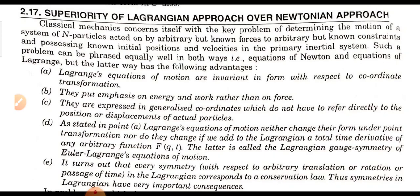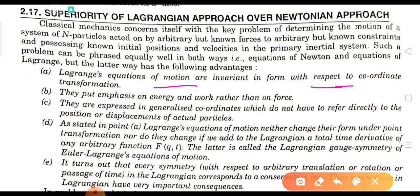To summarize, the most important points are: Lagrange's equations of motion are invariant in form with respect to coordinate transformation; they put emphasis on energy and work rather than force; and we express the Lagrangian in terms of generalized coordinates, without having to refer directly to the position or displacement of actual particles. Gauge invariance and symmetry are also very important aspects of the Lagrangian approach.